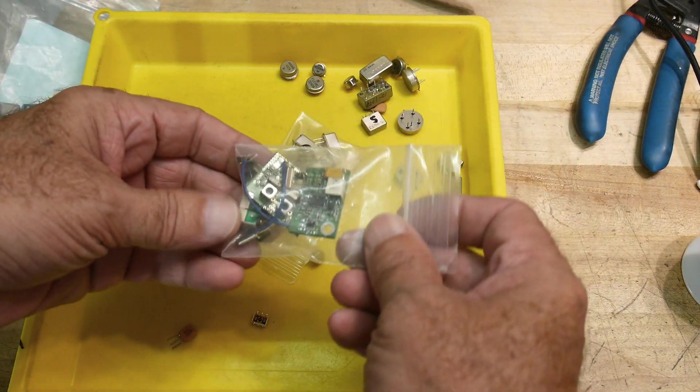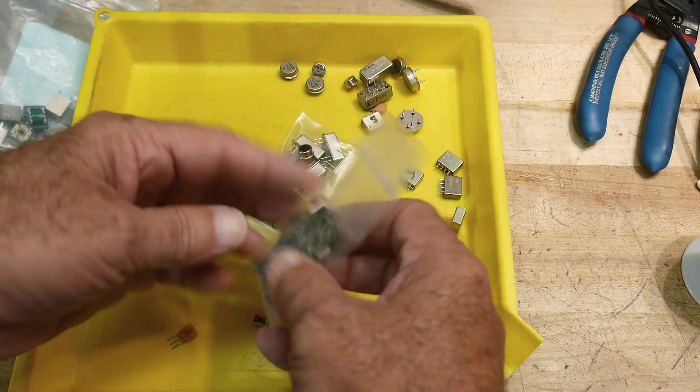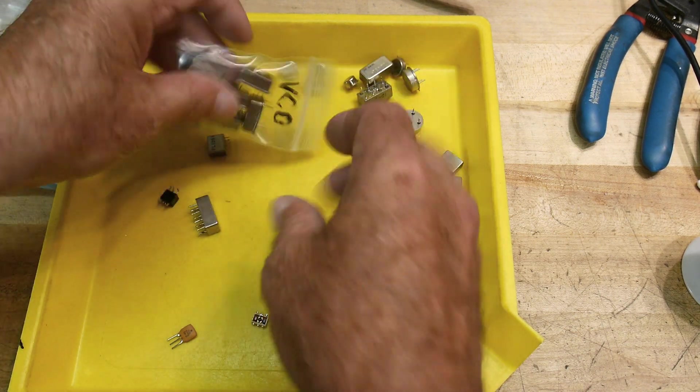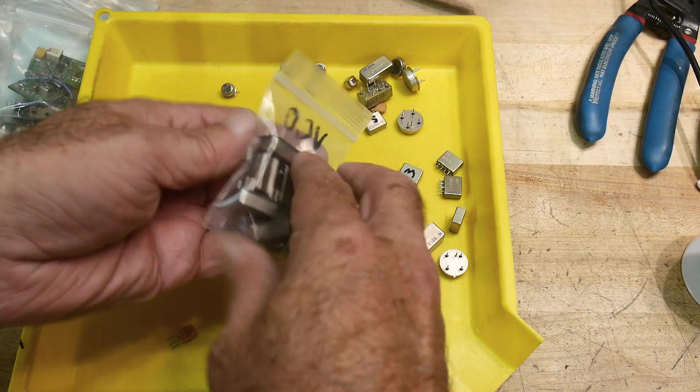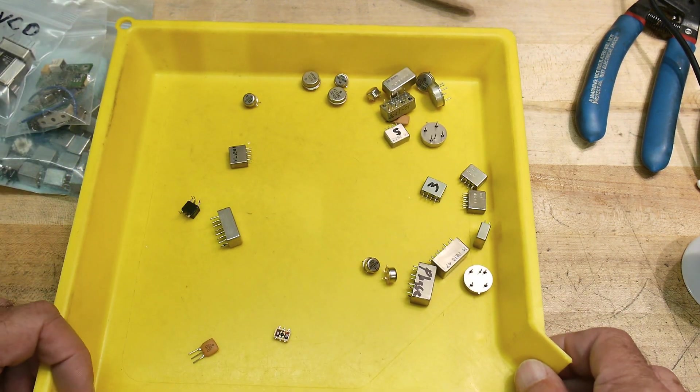All right, this bag's got some little PC boards I've kind of kept. Maybe I'll remove the little pieces on that someday. This bag's got VCOs on it. These are those 900 megahertz VCOs. All right, so this is what I'm looking for.